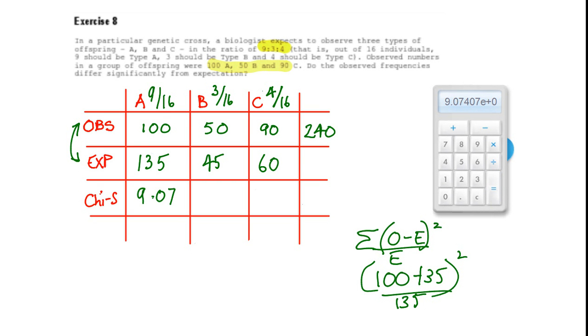For the next cell, we get a chi-squared value of 0.56, and then we've got 90 take away 60, or 30 squared divided by 60, which is 15. Altogether, these values add up to 24.63.